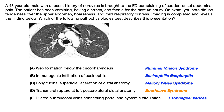Plummer-Vinson syndrome is more common in post-menopausal women, and the question gives you a 43-year-old male — a subtle extra clue. Clinically, patients present with dysphagia, choking on food, coughing, fatigue, nail changes, and dizziness. On exam you'd see glossitis, cheilitis, pallor, and koilonychia, plus labs showing iron deficiency anemia. None of that is present here, so you can safely eliminate choice A.